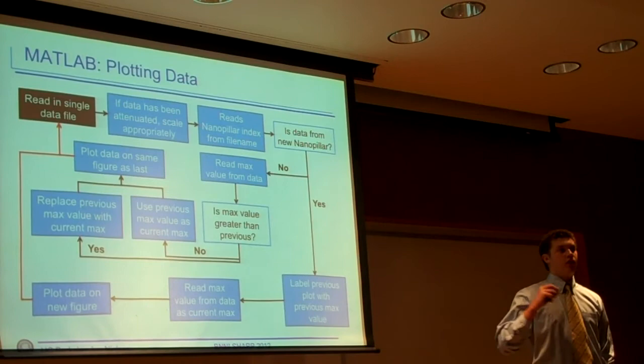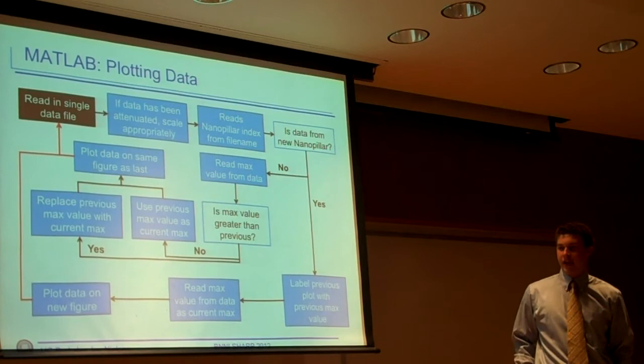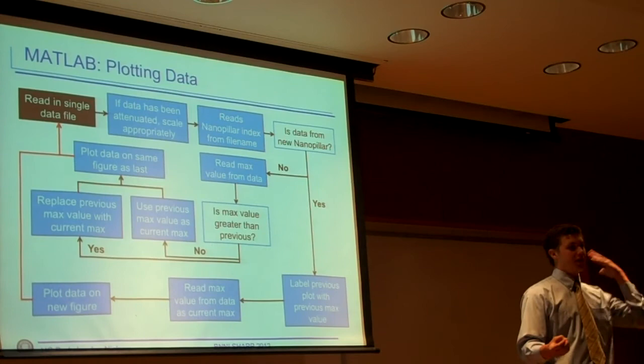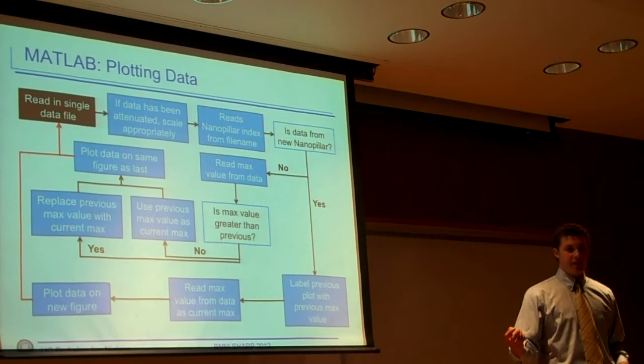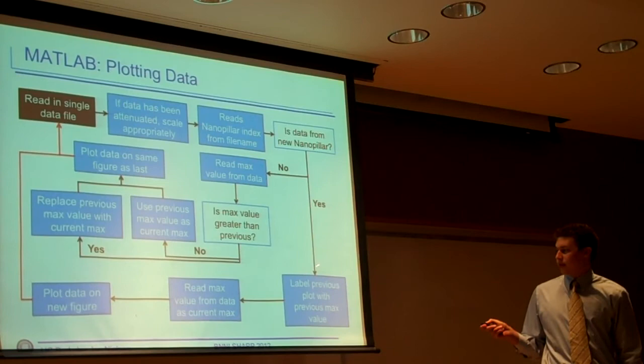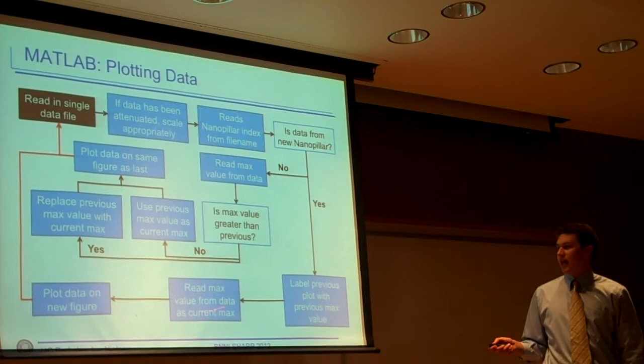The max finding, I like to think of it as, you have a container of rocks. You're trying to find the biggest rock, but you can only take one at a time. So you take out a rock, it's pretty big. You take out another rock, if this rock is not bigger than this rock, you toss that rock and look for another. If this rock is bigger than this rock, you toss that, keep this one in your right hand, and go back for more. It essentially does that until there's another nanopillar, and then it will go back through here. Label the previous plot with the previous max, read the max from the first data that it's reading, and it will plot it on a new figure, and then it will go back through the cycle all again.